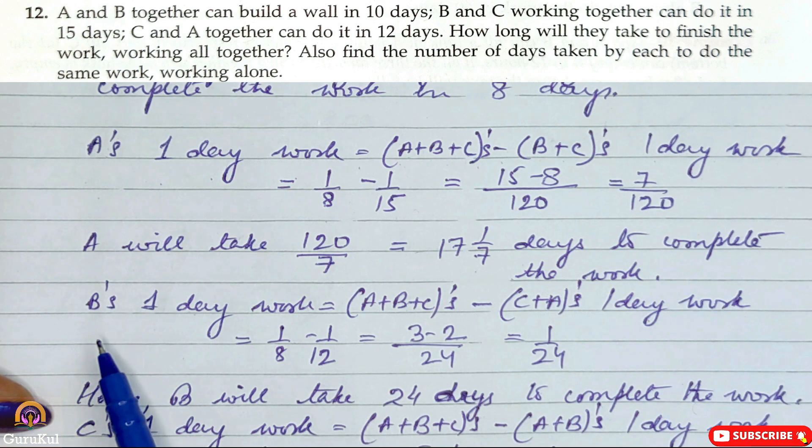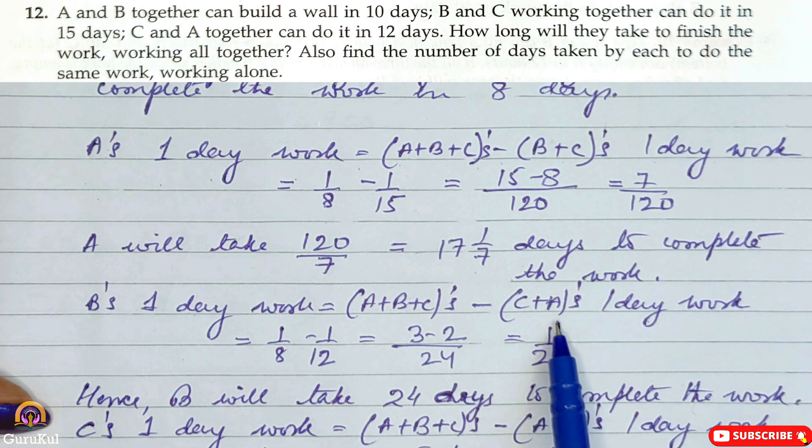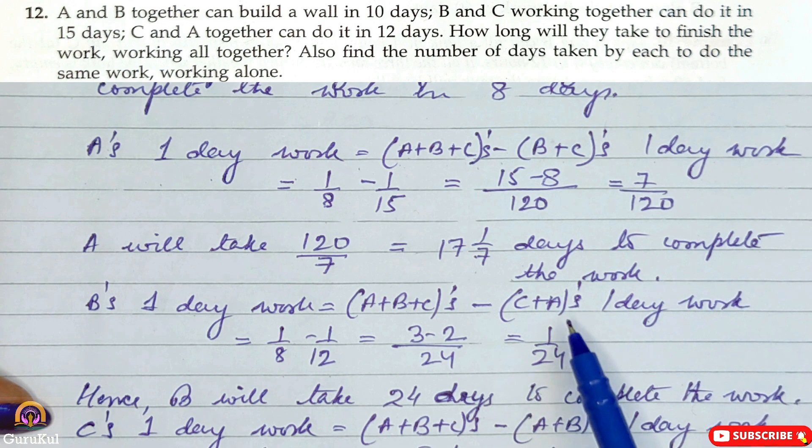Now finding B. So B's one day work is equal to A plus B plus C's minus C plus A's one day work, which is 1 by 8 minus 1 by 12. LCM is 24, so 3 minus 2 which is 1 by 24. Hence B will take 24 days to complete the given work if he is working alone.